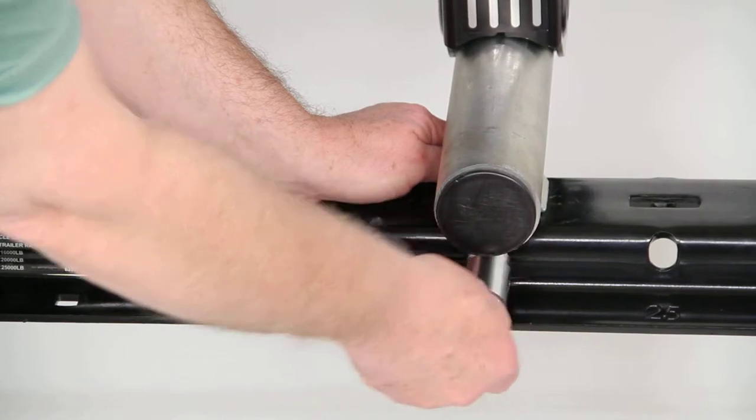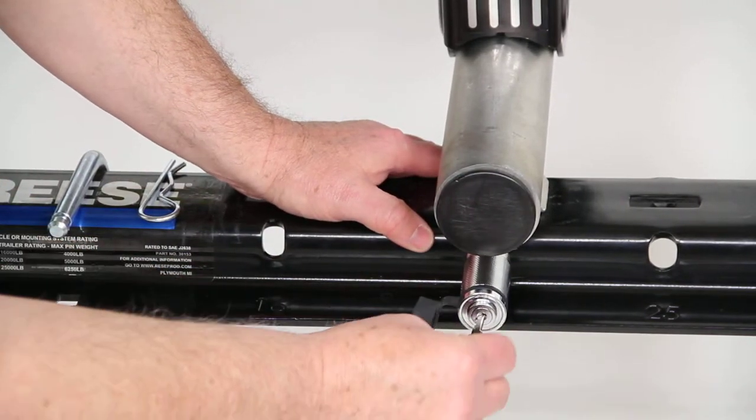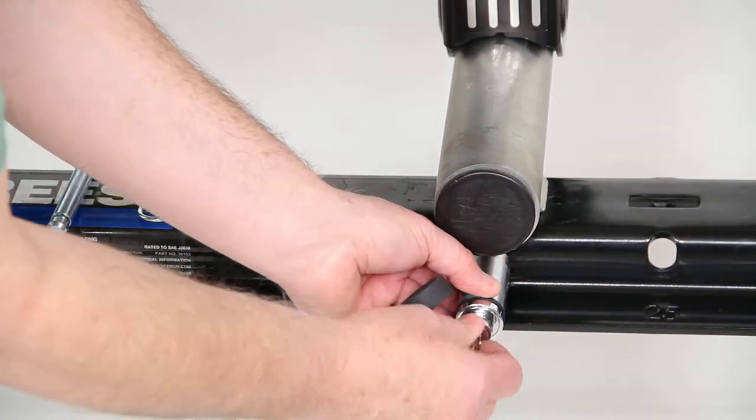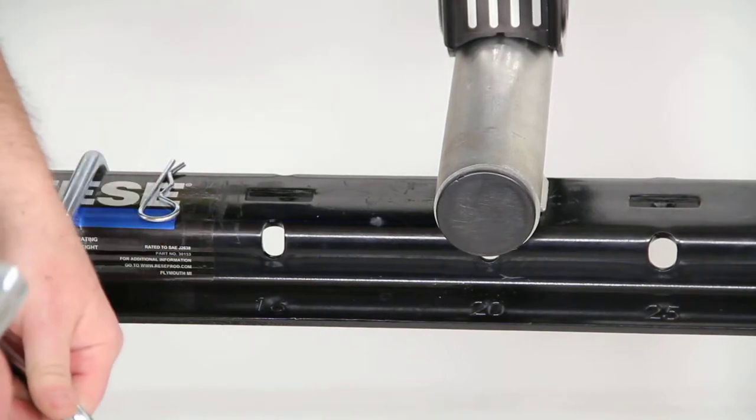To remove it, open the cover, put the key in there, turn it until it pops out, and you can take it off. Simple installation as that.